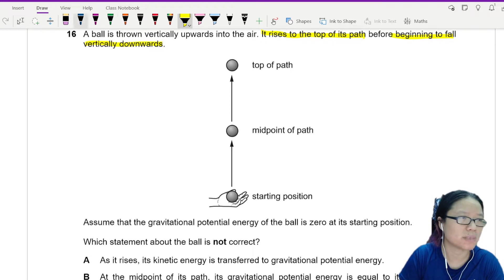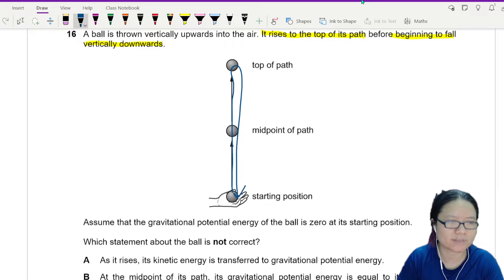So my ball is going to go up and turn down. Look, this word. Assume that the GPE of the ball is zero at the starting position. Okay, can GPE equal zero here?